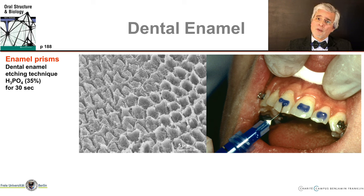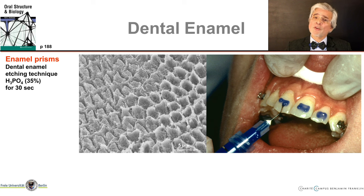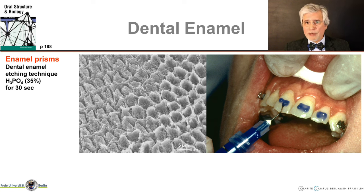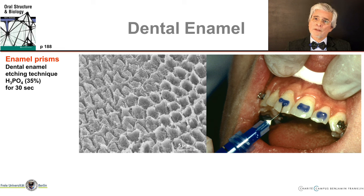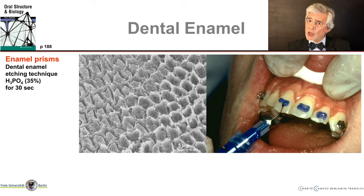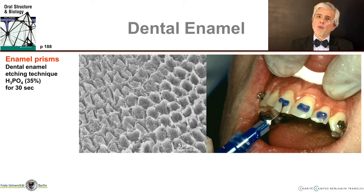This is clinically important. The enamel etching technique is based on exposing the enamel prisms, done with 35% phosphoric acid for 30 seconds. I am etching the enamel in order to bond brackets or attachments for aligner treatment in orthodontics. If there are some regions on the enamel surface where the prisms do not reach the surface, then this technique does not work. This is more likely to occur with deciduous teeth, more seldom with permanent teeth.